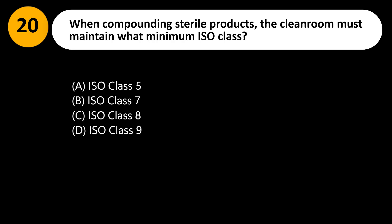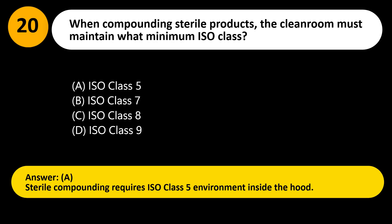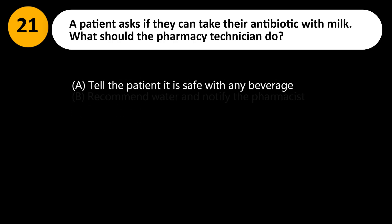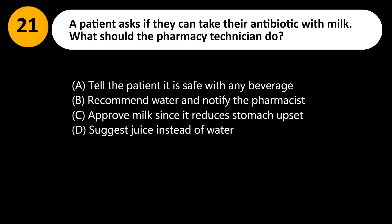When compounding sterile products, the clean room must maintain what minimum ISO class? A. ISO class 5. B. ISO class 7. C. ISO class 8. D. ISO class 9. Answer: A. Sterile compounding requires an ISO class 5 environment inside the hood.